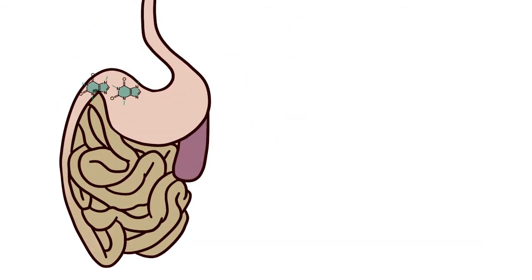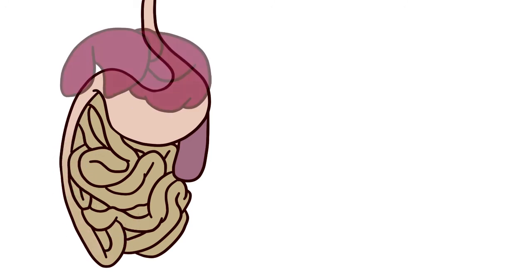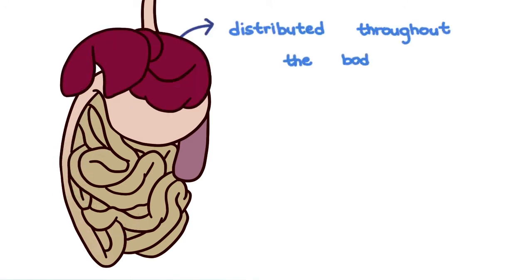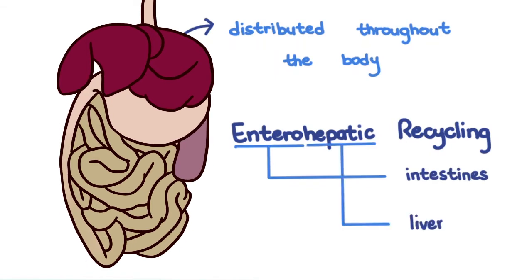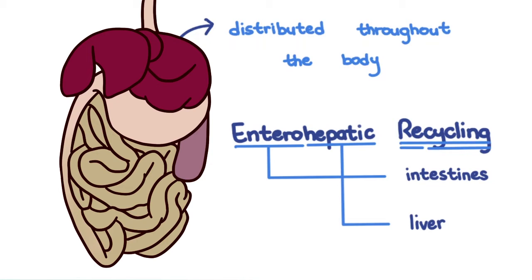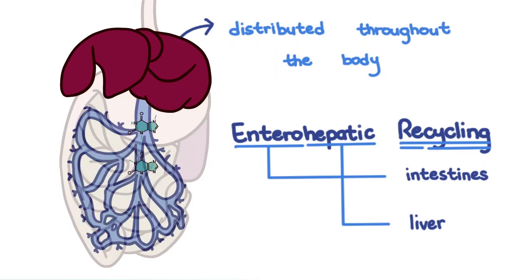Theobromine and caffeine are absorbed in the gastrointestinal tract, metabolized in the liver, and distributed throughout the body. They also undergo enterohepatic recycling — entero referring to the intestines, hepatic referring to the liver, and recycling meaning to cycle again. This means that some theobromine and caffeine, after being metabolized in the liver, are excreted into the bile, back into the intestines, and reabsorbed back into the liver, which can be problematic when we want to get rid of these metabolites.